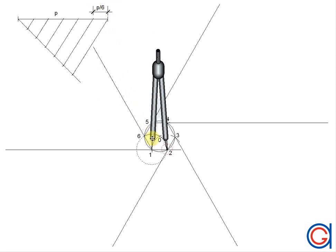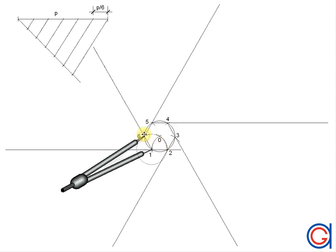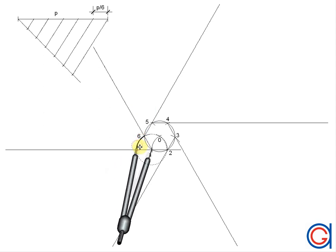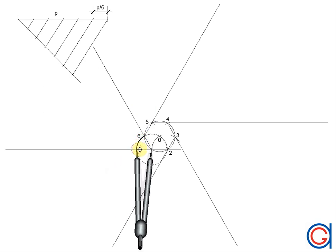So now we are ready to draw the spiral. With our compass centered on point one and length one to six, we scribe an arc to the left until it cuts the adjacent prolongation at point A, as can be seen here.